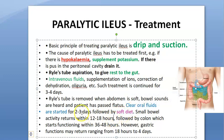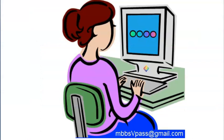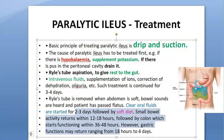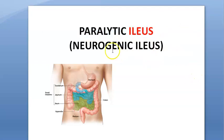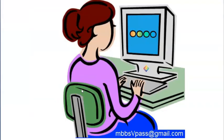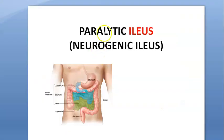After removing the Ryle's tube, slowly introduce oral fluids, then soft diet. The key point is that drip provides nutrition directly to the body without going through the intestine, while suction via Ryle's tube rests the gut. Importantly, there is no surgery for paralytic ileus — this is a surgery topic mainly because post-operative patients are at risk of developing it, so surgeons must be aware.